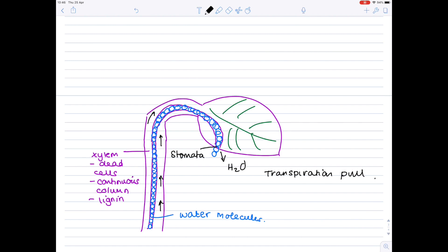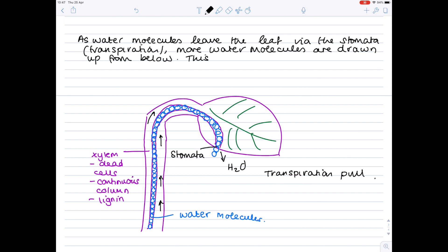So I'll make a note of that now. So as water molecules leave the leaf via the stomata, we call this transpiration, more water molecules. I'll draw on that from below. So this is due to cohesion of water molecules as a result of their hydrogen bonding.